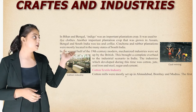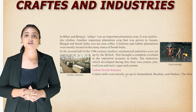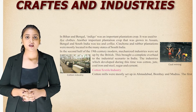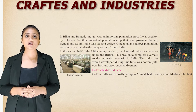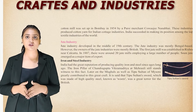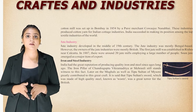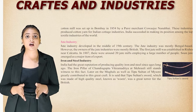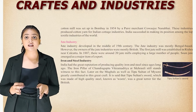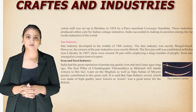Cotton mills were mostly set up in Ahmedabad, Bombay, and Madras. The first cotton mill was set up in Bombay in 1854 by a Parsi merchant, Kawasji Nanabhai. These industries produced cotton yarn for the Indian cottage industry. India succeeded in making its position among the top textile industries of the world.